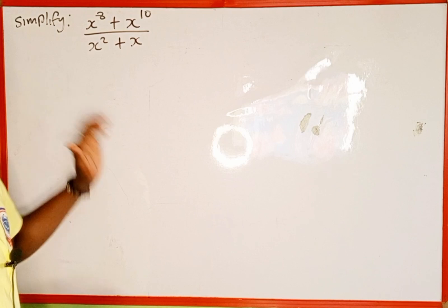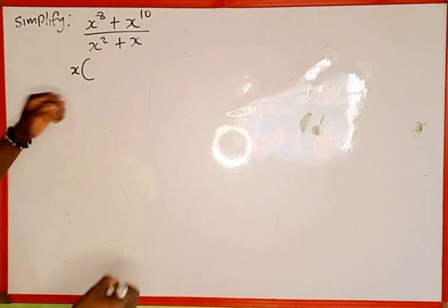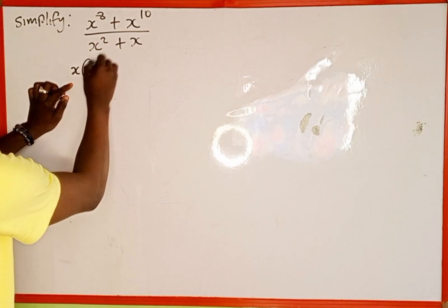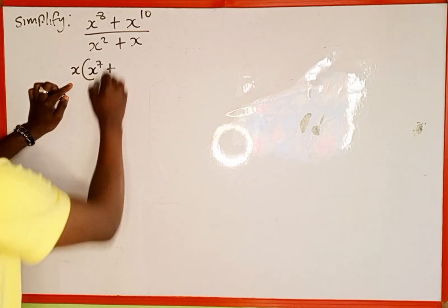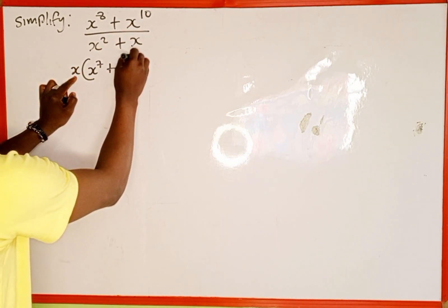This is x and x, so x is common here. So we are going to factor out x, then we open brackets. Now we are going to divide. x to power 8 divided by x is going to remain x to power 7, then plus x to power 10 divided by x is going to be x to the power of 9.